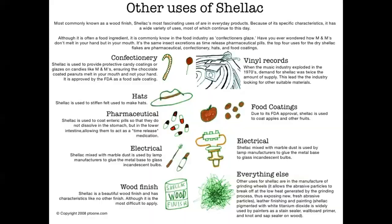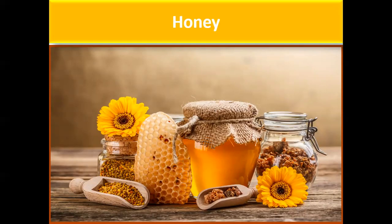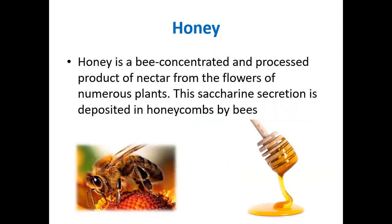The next drug we are going to study is honey. Honey is a bee-concentrated and processed product of nectar from the flowers of numerous plants. The origin is flowers, but nectar is converted into honey by the bee, so honey comes from animal origin — the bee itself. This saccharine secretion (nectar) is deposited in honeycomb by bees.